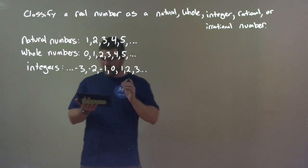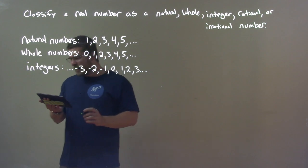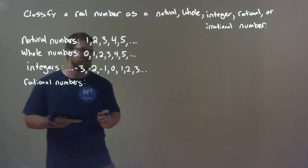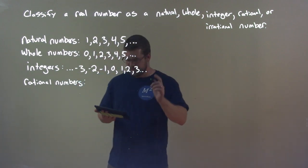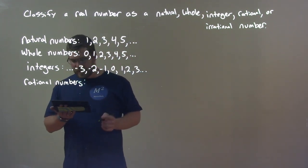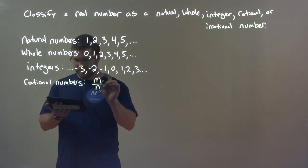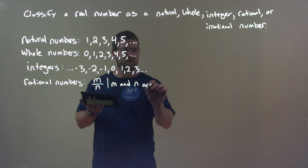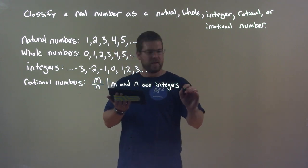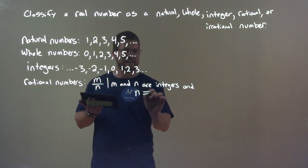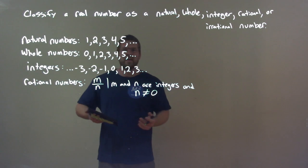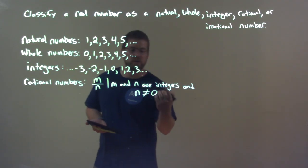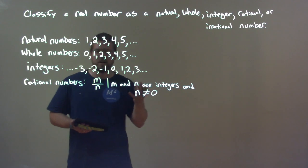Now, the rational numbers are a little different. When we think of rational numbers, we think of things that can be a fraction. The way it's defined, it's written as m over n, where m and n are integers, and n cannot equal zero.